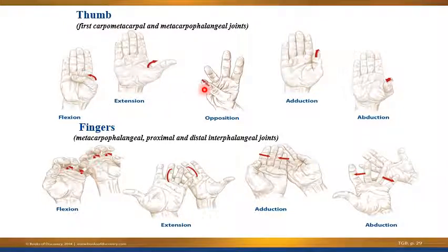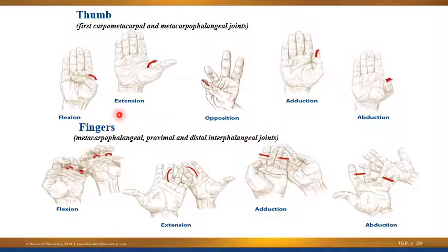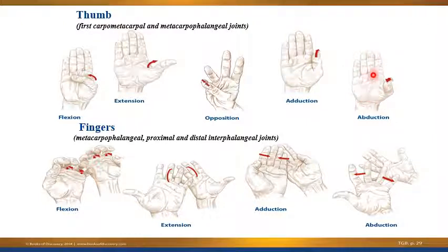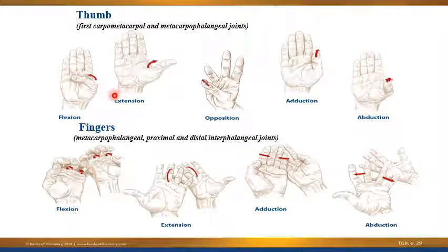Movement at the thumb involves both the first carpometacarpal and the metacarpophalangeal joints. The metacarpophalangeal joint is where the metacarpal bone meets the first phalanx, and the carpometacarpal joint is where the metacarpal bone articulates with the carpal bone at the wrist. Some movements occur more at one joint versus the other. Flexion, extension, opposition, adduction, and abduction all occur at the thumb. Abduction is when the thumb moves away from the hand's midline, and adduction is when it moves towards it — distinct from flexion and extension.